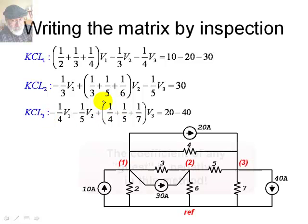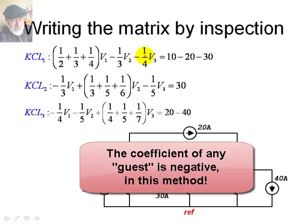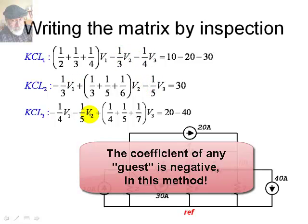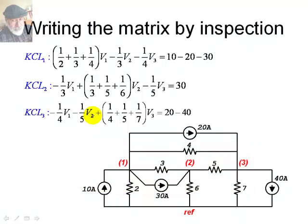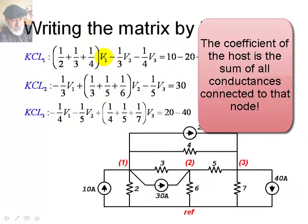While all the coefficients of all the guests in every equation are all negative. That's interesting. What else? The coefficient of the host is always the sum of all the conductances connected to that node. Remember, conductance is the inverse of the resistance.